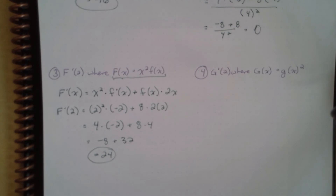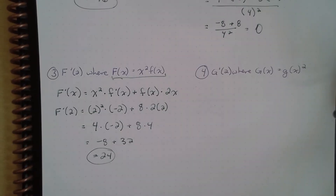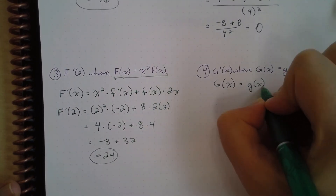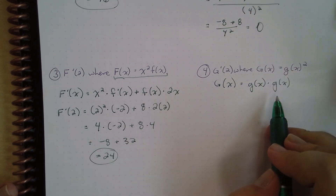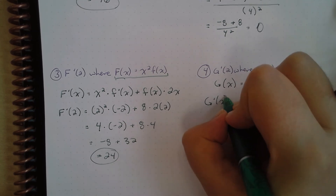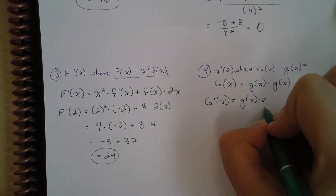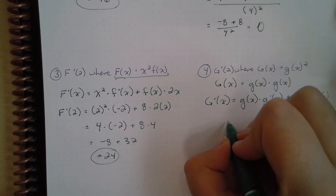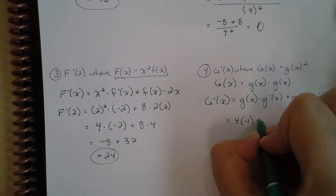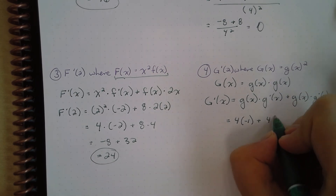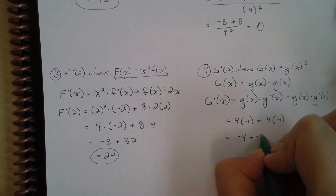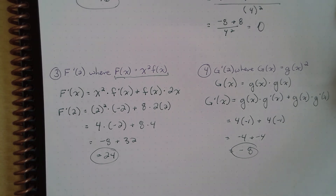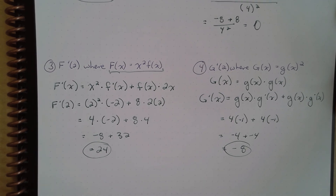Finally, we find G prime(2) where G(x) equals g(x) quantity squared, which is g(x) times g(x). Using the product rule, G prime(x) equals g(x) times g prime(x) plus g(x) times g prime(x). So G prime(2) equals 4 times negative 1 plus 4 times negative 1, which is negative 4 plus negative 4, equals negative 8. That's the product and quotient rule in action — any questions, leave them in the comments, and I'll see you in class!